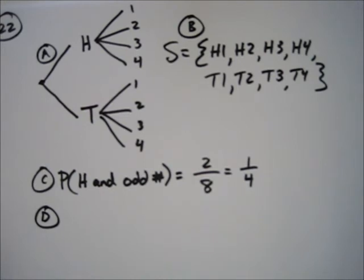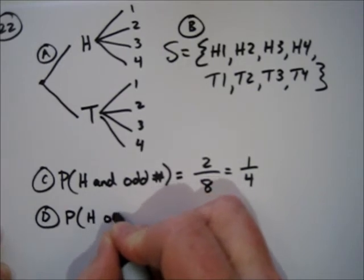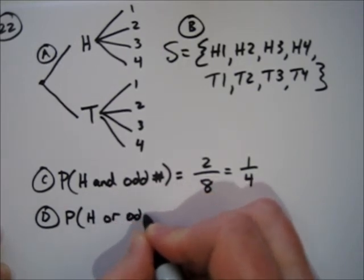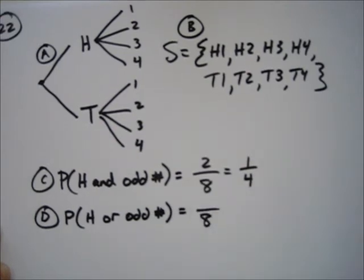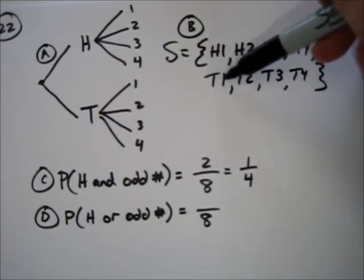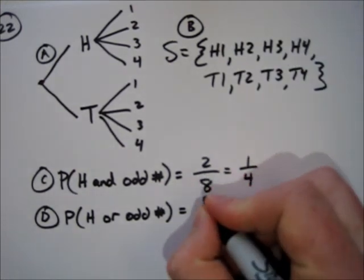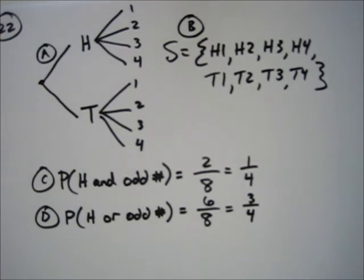Lastly, part D asks for the probability that a head is flipped or an odd number is selected. Again, there are eight possible outcomes. The first four all have heads, and then T1 and T3 also have an odd number, so six of them meet the requirements. That reduces to three over four — that's the probability that you will get heads or odd.